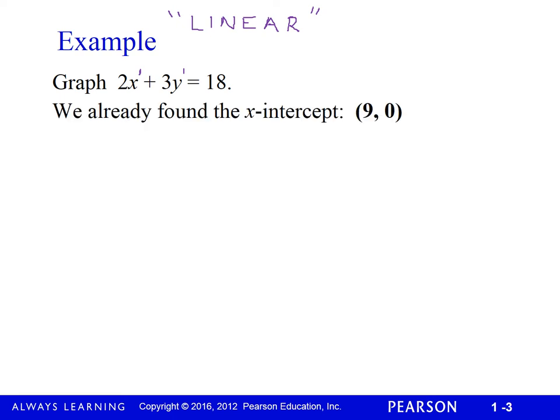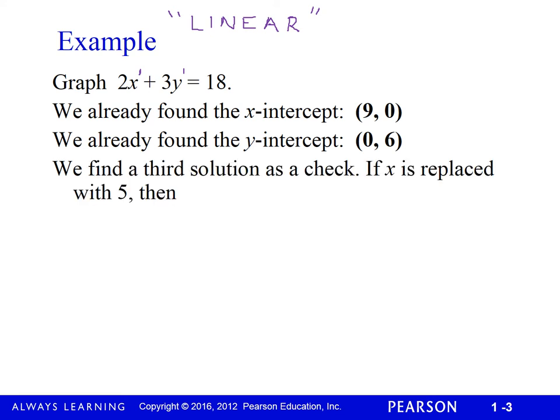We already found the x-intercept (9, 0) and the y-intercept (0, 6). We always like to have a third point as a check. Even though two points determine a line according to Euclid, we could make a mistake. If we made a mistake, the three points won't be collinear, and we'll know instead of moving on without realizing it.